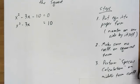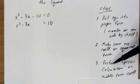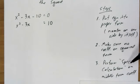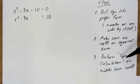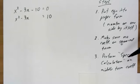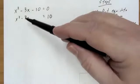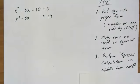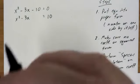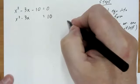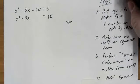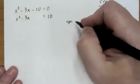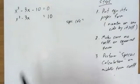Now here's the whole key to completing the square. I have a thing called performing a special calculation on the middle term coefficient. I just call it the special calculation because we're going to do a calculation, and it's going to be done on what I call the middle term. So here's the middle term, and it's really looking at the coefficient. I would do this off to the side.